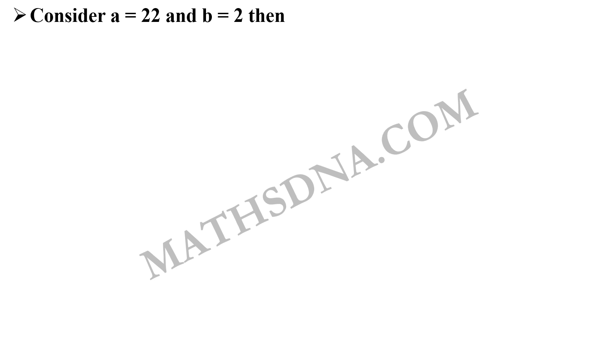Consider a equals 22 and b equals 2. Then, for option B, that is 3b is greater than a is greater than 2b is not possible because 6 is not greater than 22. It is not greater than 4. This is not possible. So, option B is incorrect.